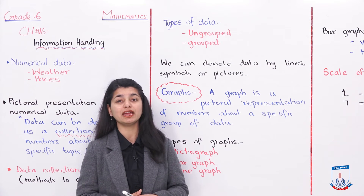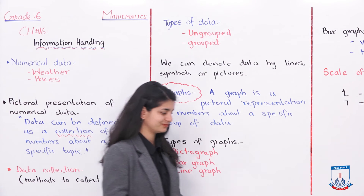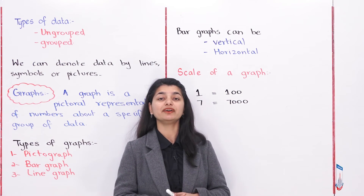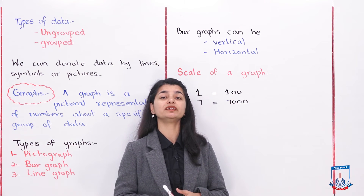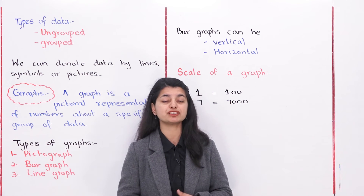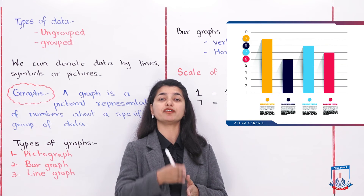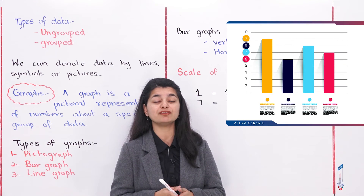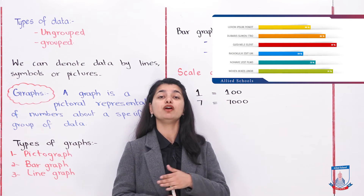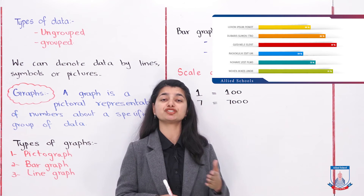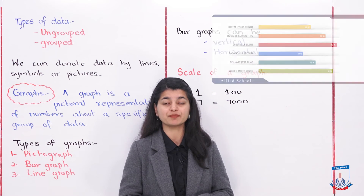Bar graphs can either be vertical or horizontal. In a vertical bar graph, the bars go upwards — you can see them aligned vertically. In a horizontal bar graph, the bars are aligned from left to right, so their direction is different. To read and derive information from either type is almost similar.